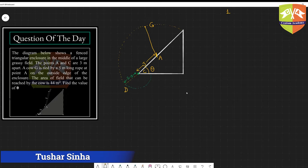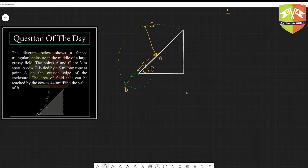Hello friends and welcome to this problem solving session. We are taking up today the question of the day. The diagram below shows a fenced triangular enclosure in the middle of a large grassy field.